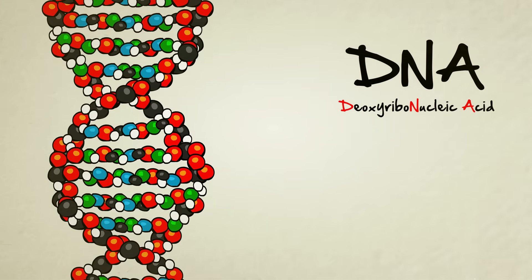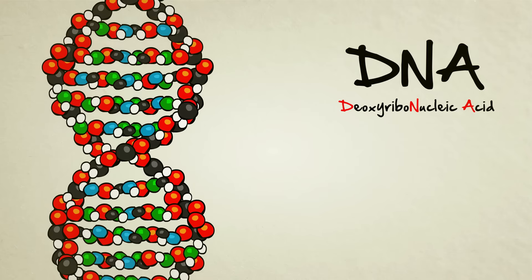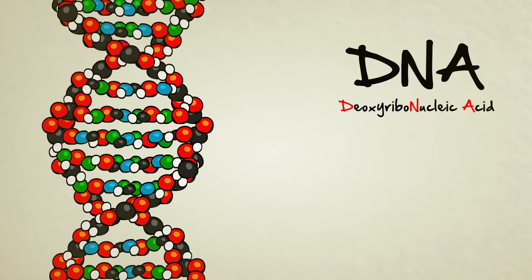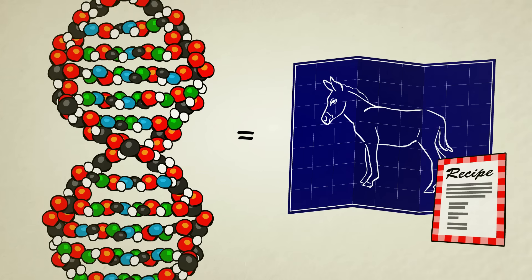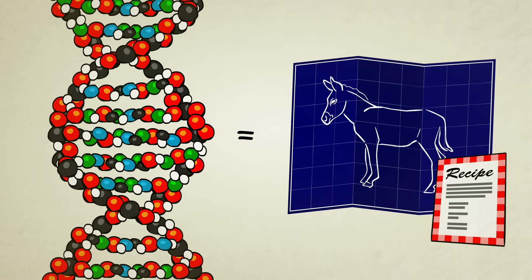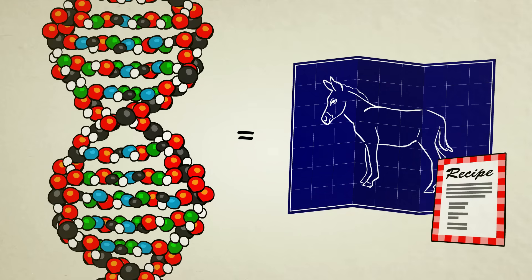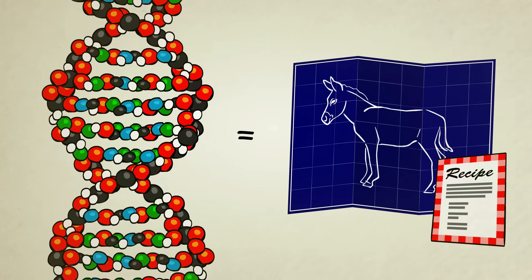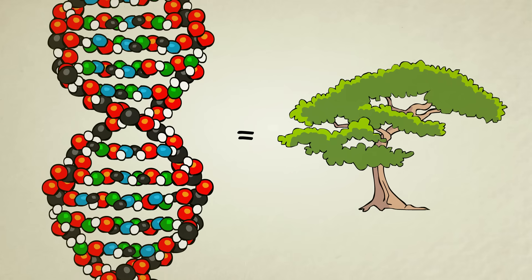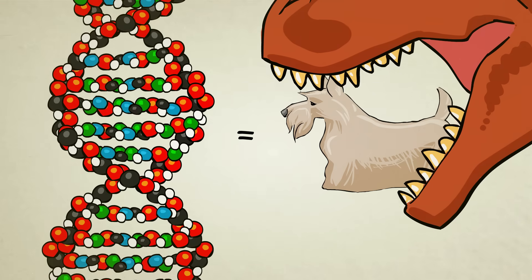If you ever studied biology or saw the movie Jurassic Park, you probably heard that DNA acts as a blueprint or a recipe for a living thing. But how? How on earth can a mere molecule act as a blueprint for something as complex and wonderful as a tree, a dog, or a dinosaur?